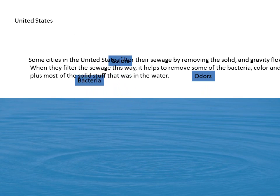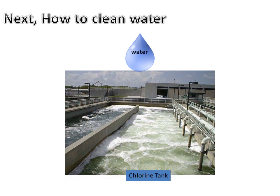Some cities in the United States filter their sewage by removing the solids and allowing the liquid sewage to flow through sand. When they filter the sewage this way, it helps to remove some of the bacteria, color, and odor, plus most of the solid material that was in the water.